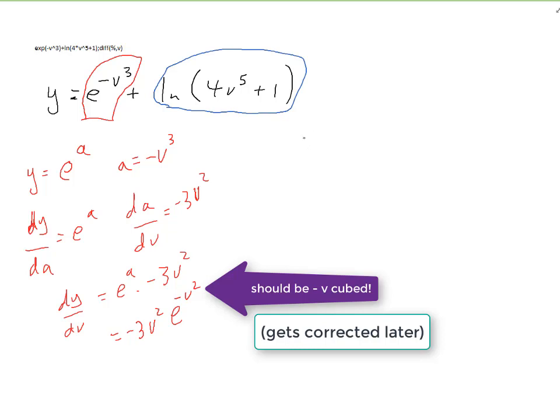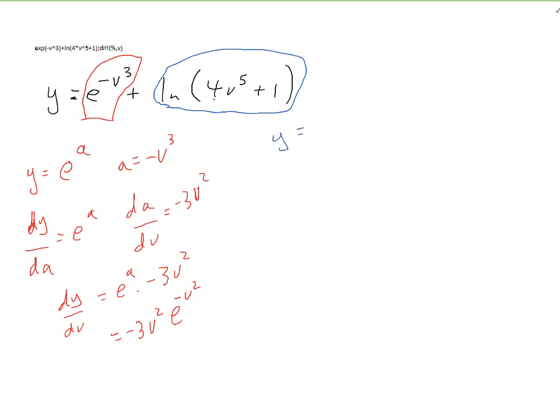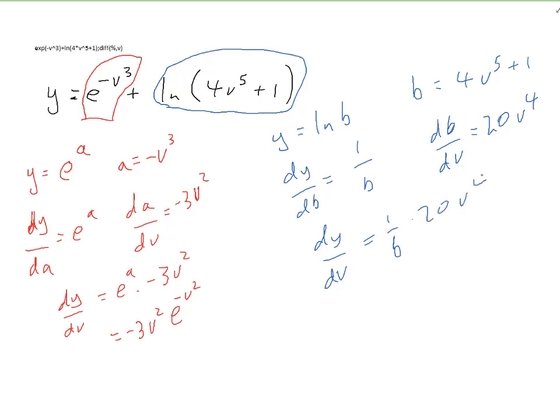Now I have to do the whole thing again with this part. And here I'm going to use b. So y, but y is only this part of y, is equal to ln b. So that's very straightforward. But b itself is equal to 4v⁵ + 1. Differentiate each part. So dy/db equals 1 over b using the simple rule. And db/dv is equal to 20v⁴.